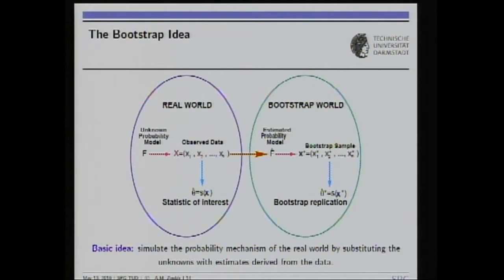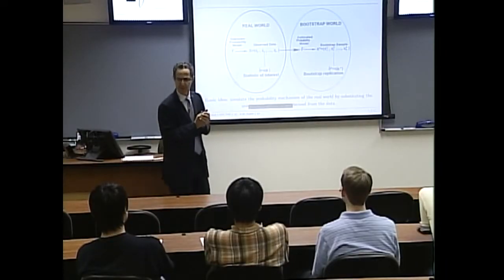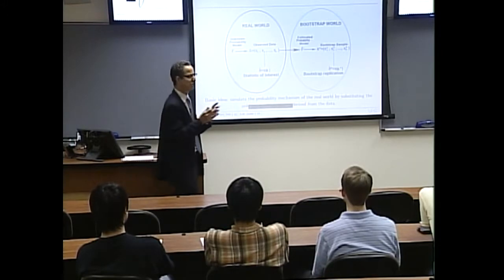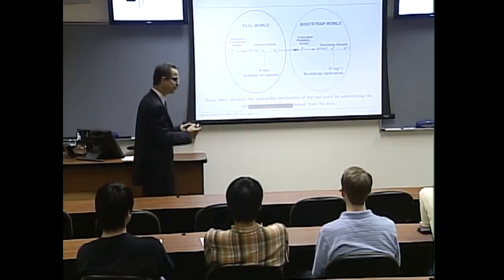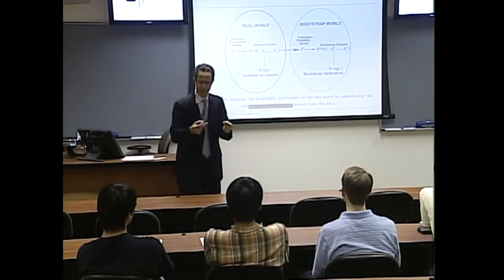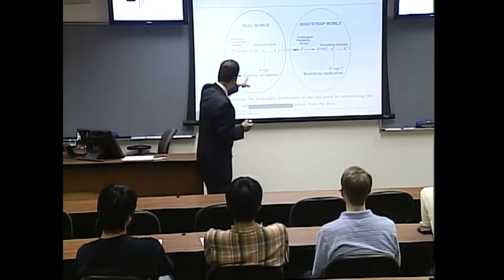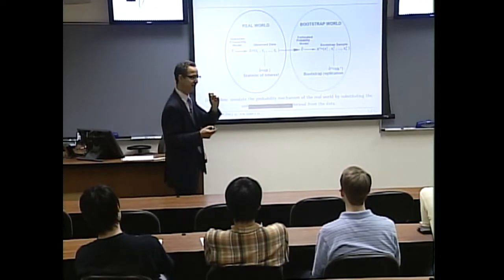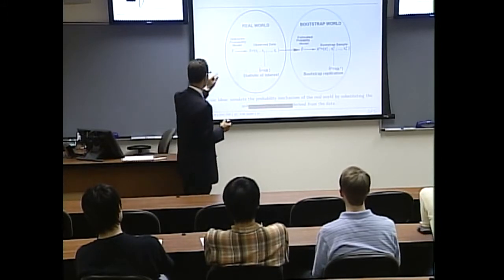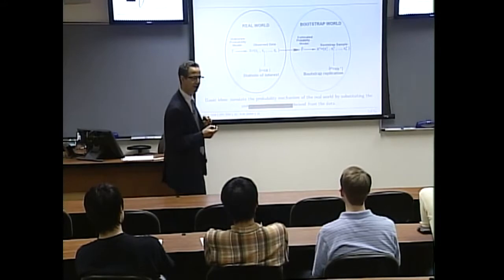Here we have the real world on the left-hand side: some unknown probability model — the population distribution. You draw a sample, get observations x_1 to x_n, and you're interested in estimating an unknown of f, say the mean. You take the average and have a sample mean. What you want is to answer: what is the distribution of that sample mean, not knowing f? That's the statistic. If we knew f, we could derive characteristics of theta-hat. If not, we could use asymptotic arguments that the sample mean may be Gaussian.